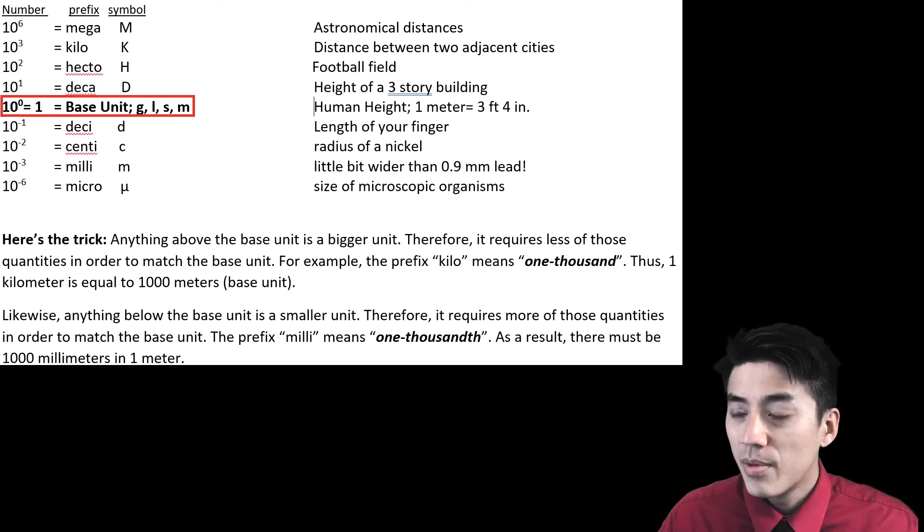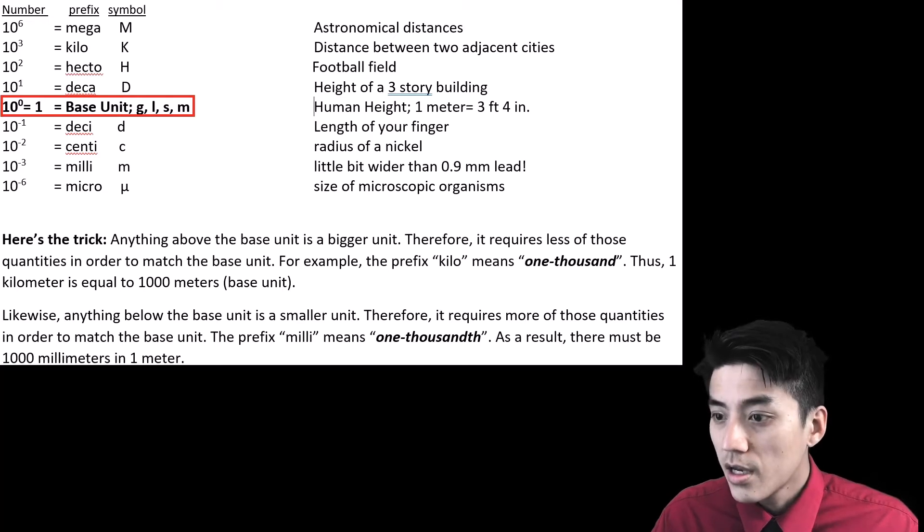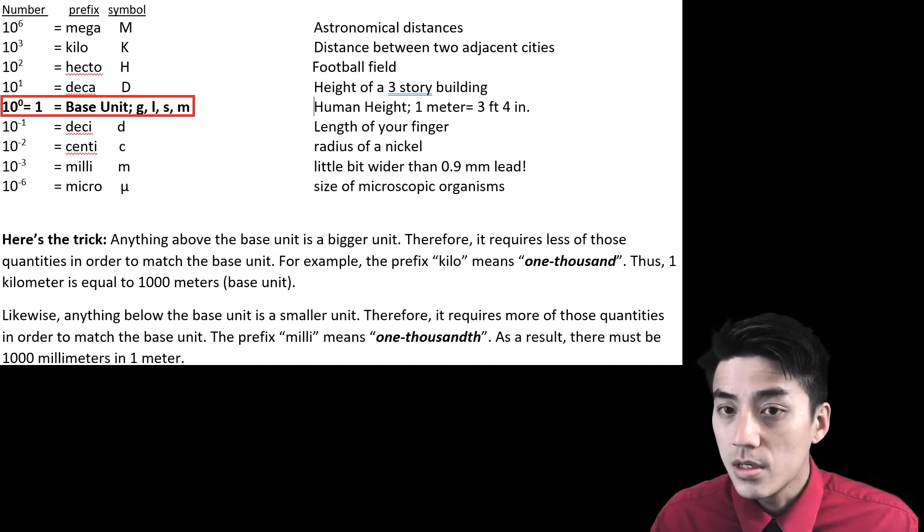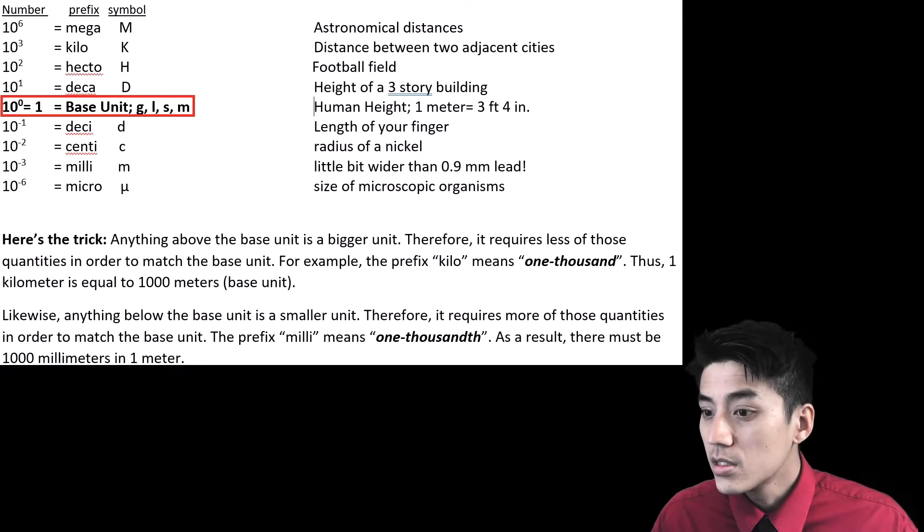If you look at your notes, you'll notice that I boxed the base units there in red. You're essentially looking at three columns: number, prefix, and symbol. The number for the base unit is 10 to the 0, or 1. Your base units are grams, liters, seconds, and meters.